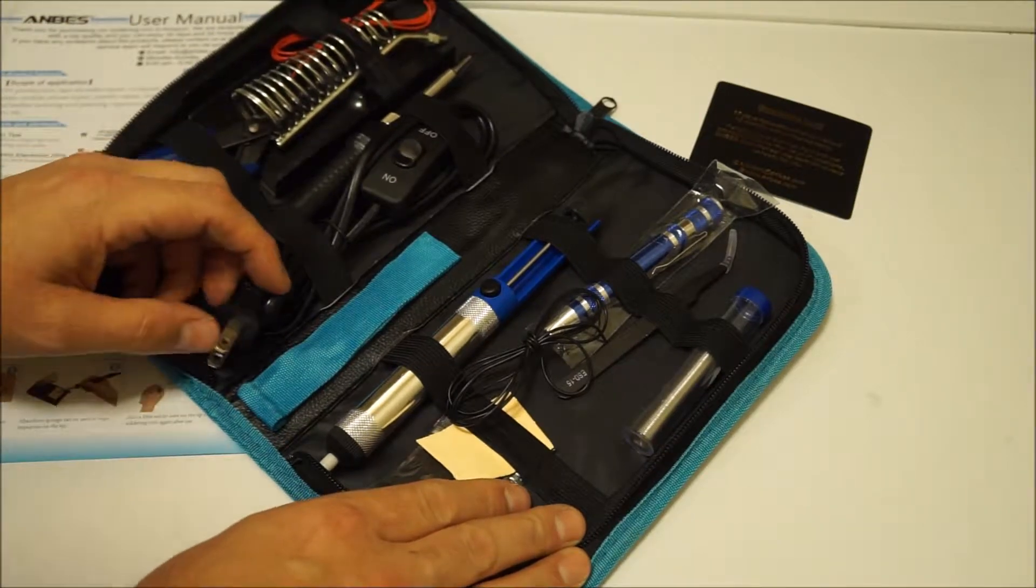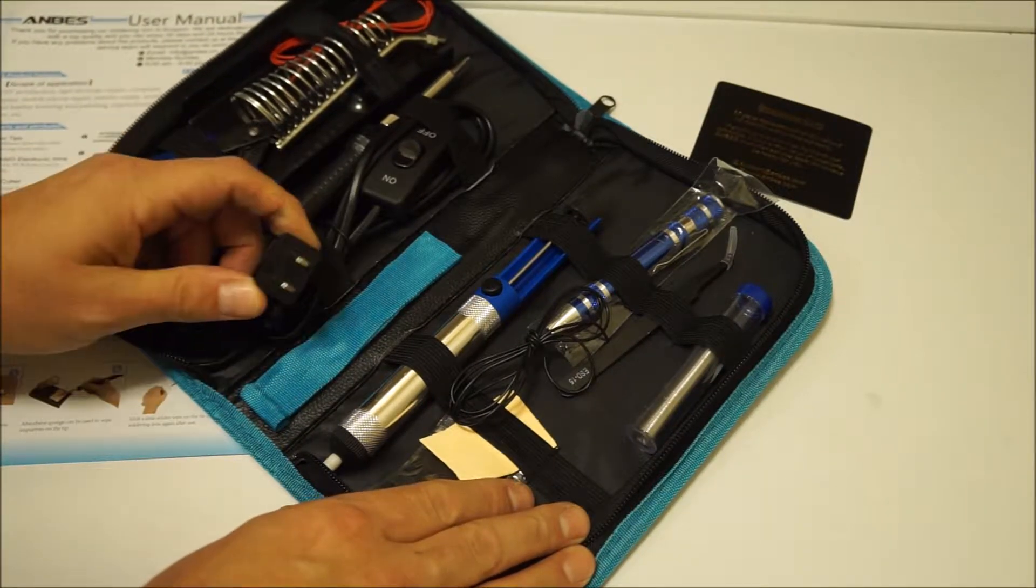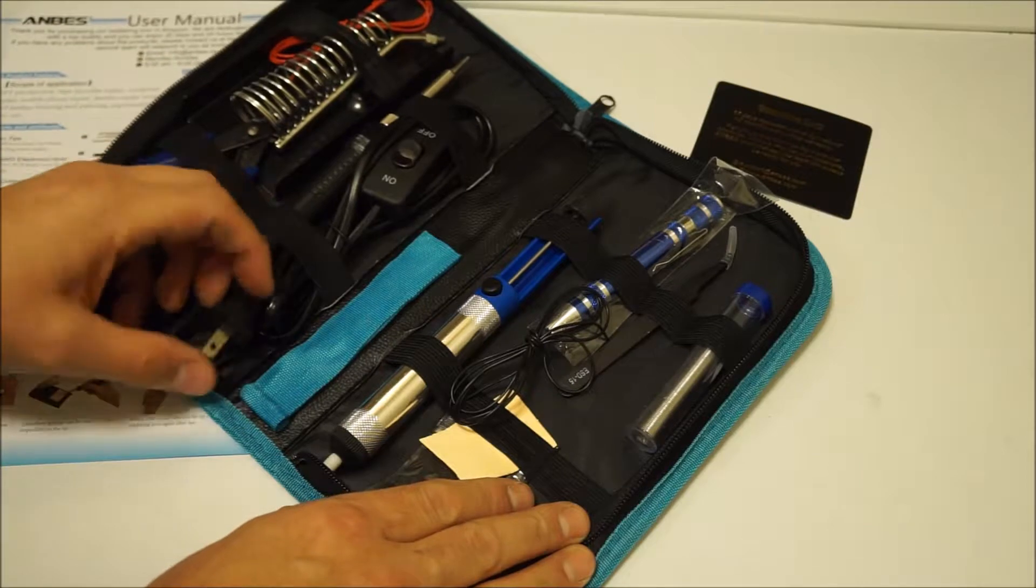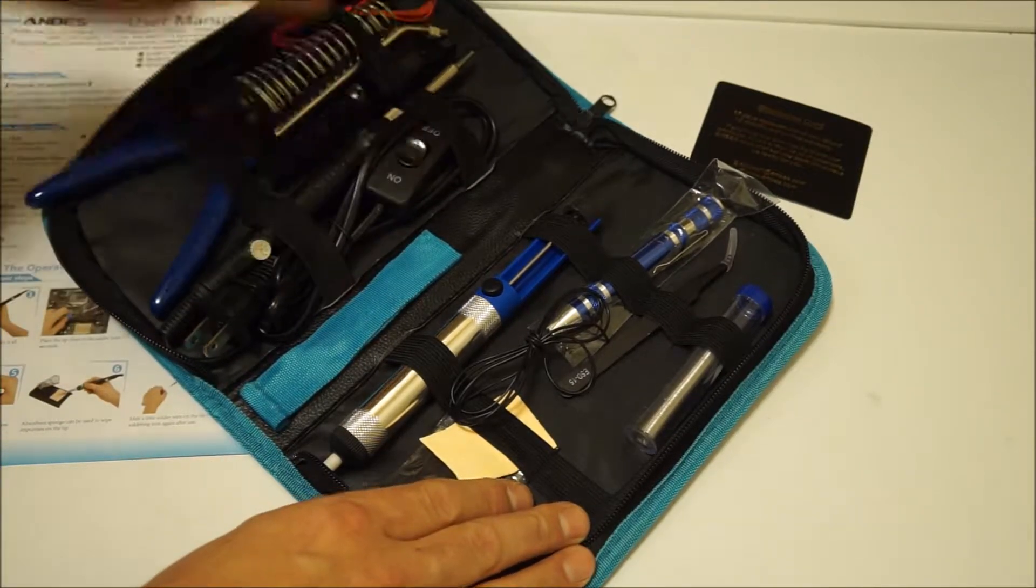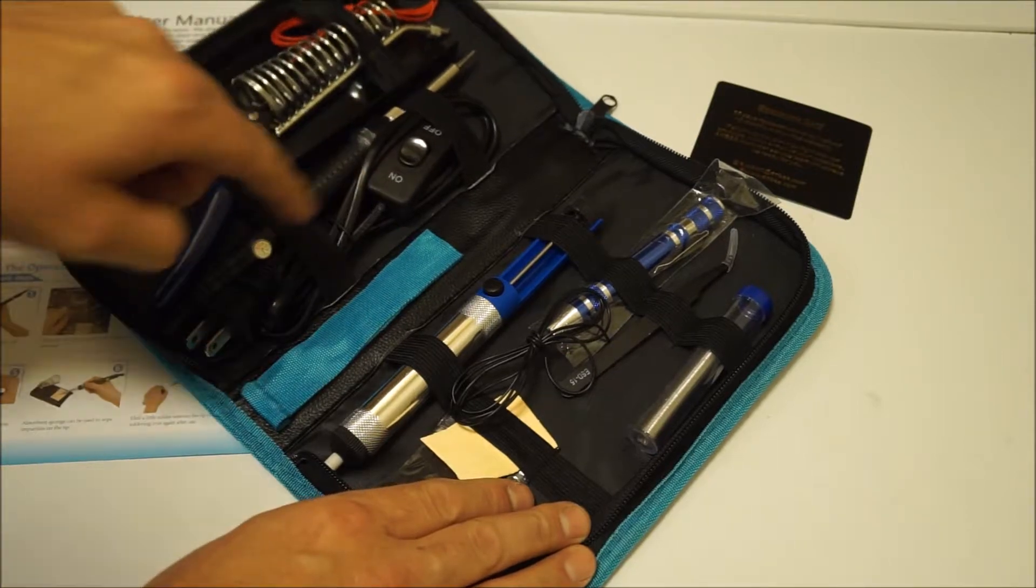I've just got a little 30 watt soldering iron that you plug it in and it's on and you unplug it to turn it off. So for an adjustable one with on-off that's kind of nice when it's in line to the power.